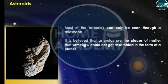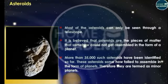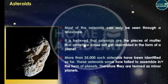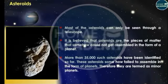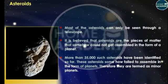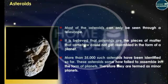More than 35,000 such asteroids have been identified so far. These asteroids somehow failed to assemble in the form of planets, and therefore they are termed as minor planets.